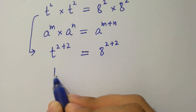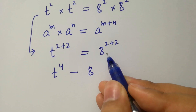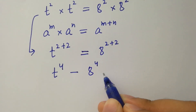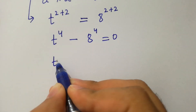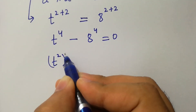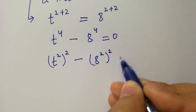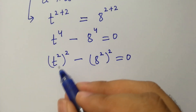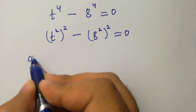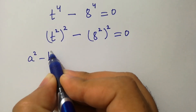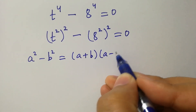So t to the power 4 minus 8 to the power 4 equals 0, which is the same as t squared to the power 2 minus 8 squared to the power 2 equals 0, since 2 times 2 is 4. By this, we apply the formula a squared minus b squared which equals a plus b times a minus b.